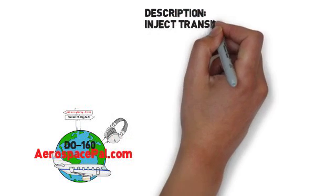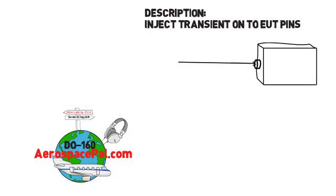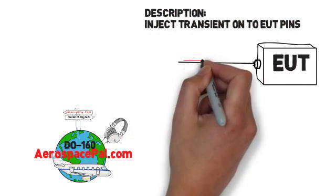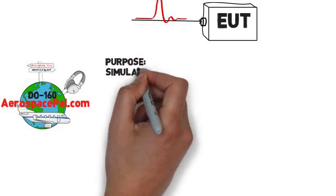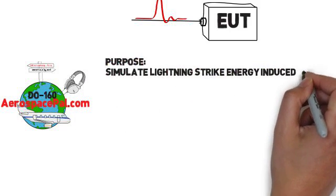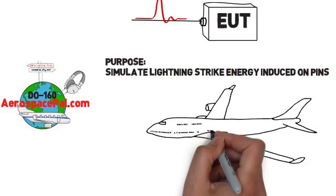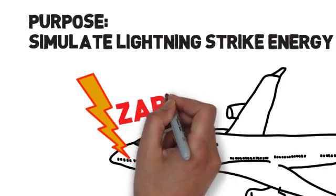Now during this test, we're going to inject a transient waveform on each pin of your EUT to determine the damage tolerance of the internal circuitry. The purpose of this test is to simulate the energy from a lightning strike that's going to be induced onto your cable and seen at each pin of your product.